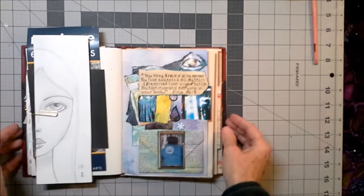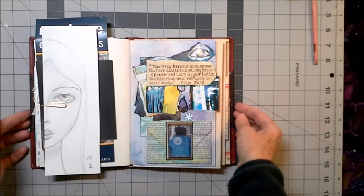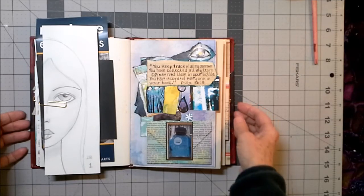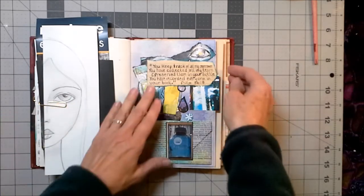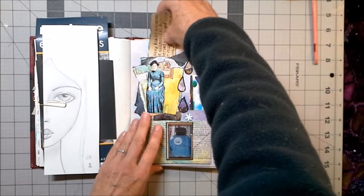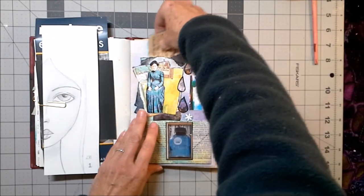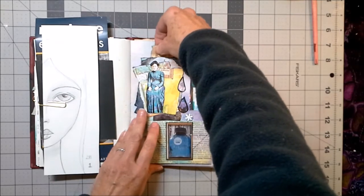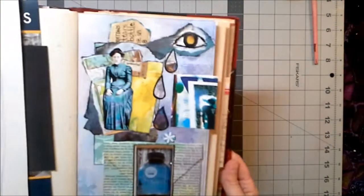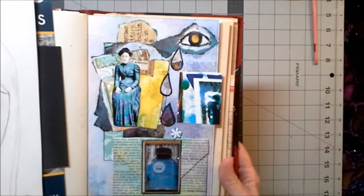You keep track of all my sorrows. You have collected all my tears and preserve them in your bottle. You have recorded every one in your book. And that's Psalm 56:8. That just kind of touched my heart this morning when I read that in my little meditation book, so I wanted to...